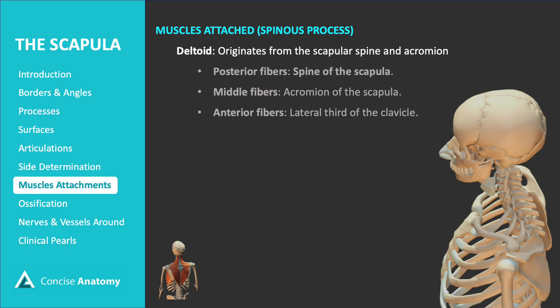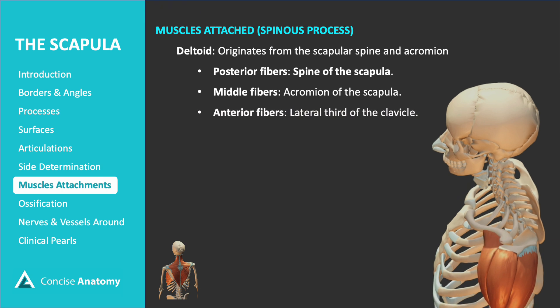The deltoid muscle has three distinct origins: the posterior fibers start from the spine of the scapula, the middle fibers originate from the acromion of the scapula, and the anterior fibers arise from the lateral third of the clavicle.